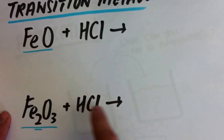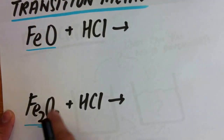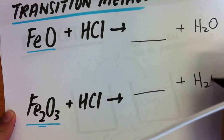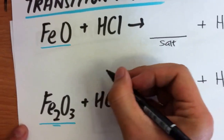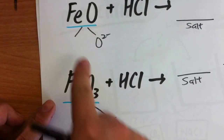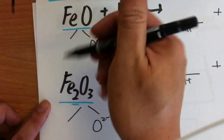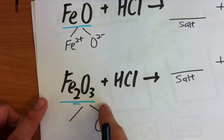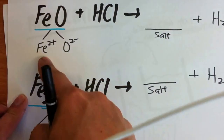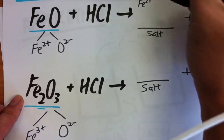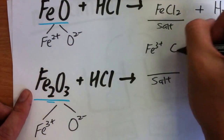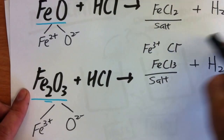What happens if we have transition metals? Let's look at two cases — both are oxides plus acid, giving salt plus water. For the iron oxide with ratio 1:1 with oxygen (2 minus), the iron must be 2 plus. For the other iron oxide with ratio 2:3, the iron must be 3 plus. Since the charges are different, the salts are different. With Cl minus, you get FeCl2 or FeCl3 respectively. Then balance the equation accordingly.